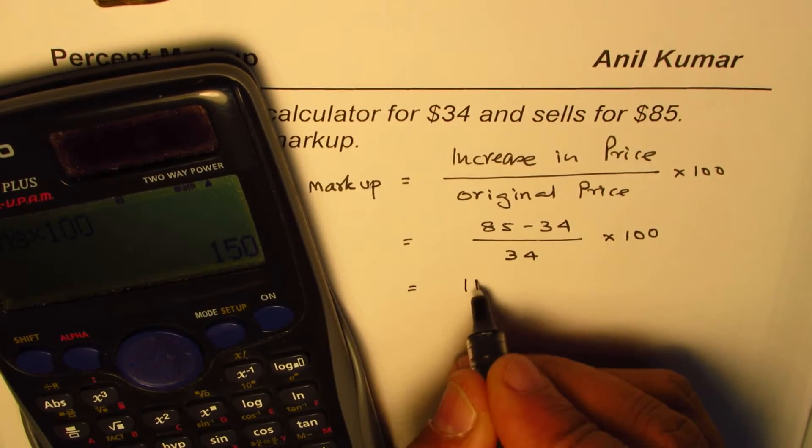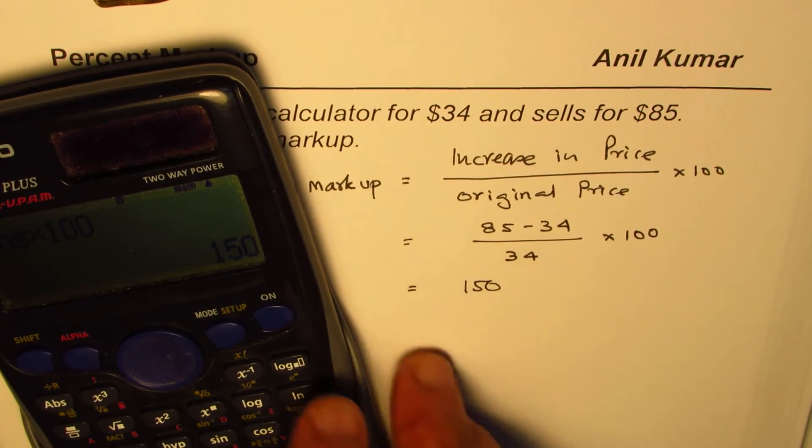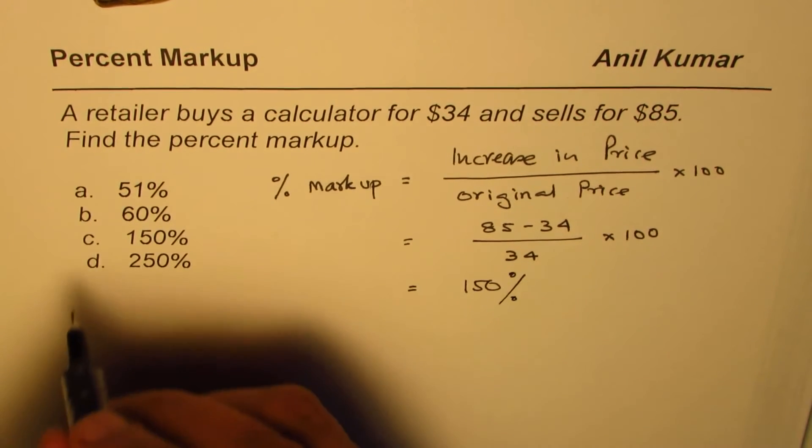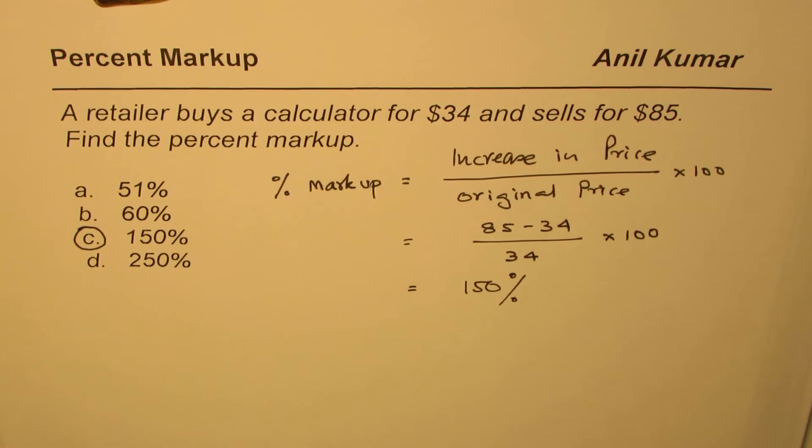And that gives us 150, right? The markup is 150 percent, which is option C.